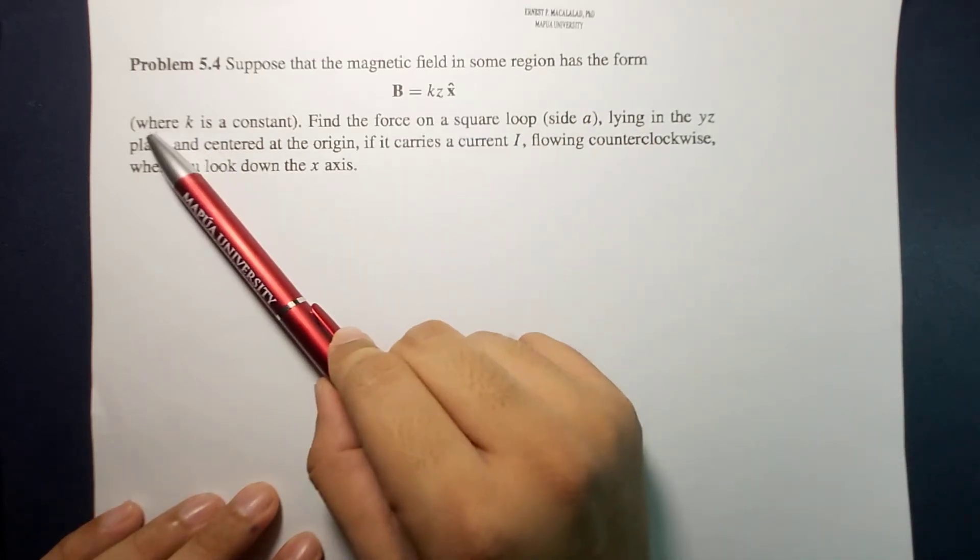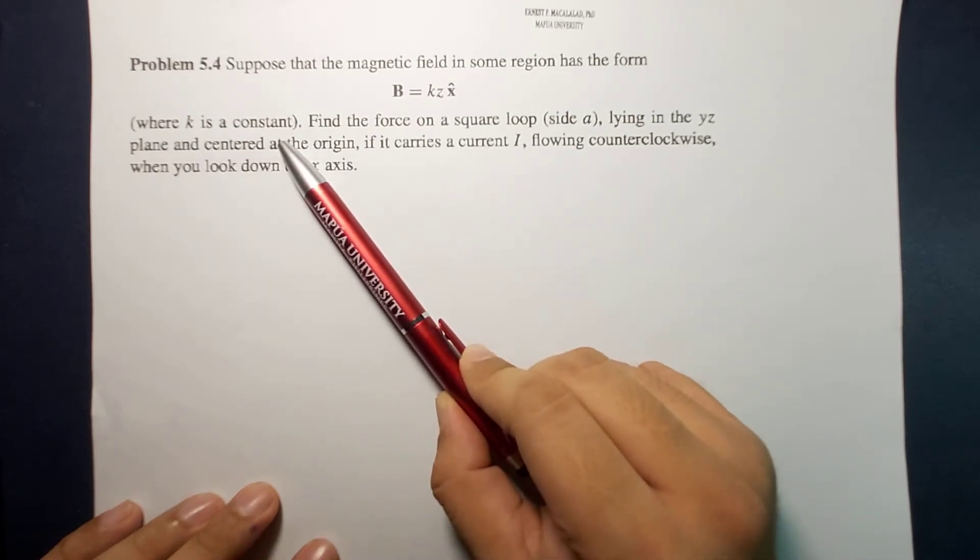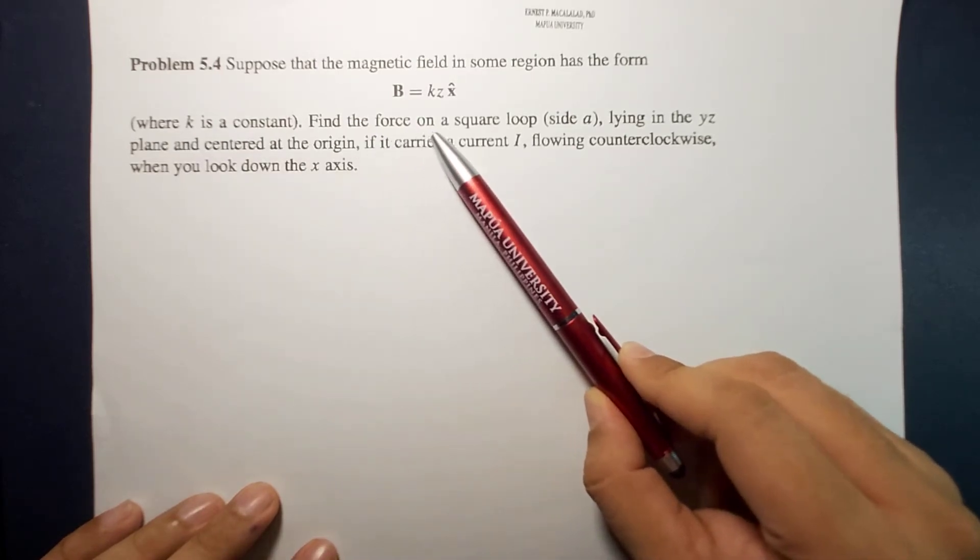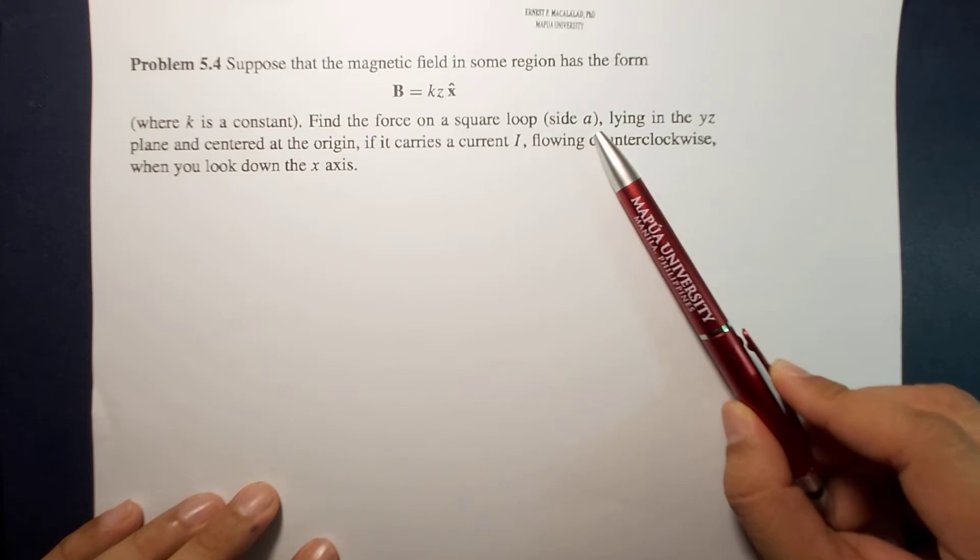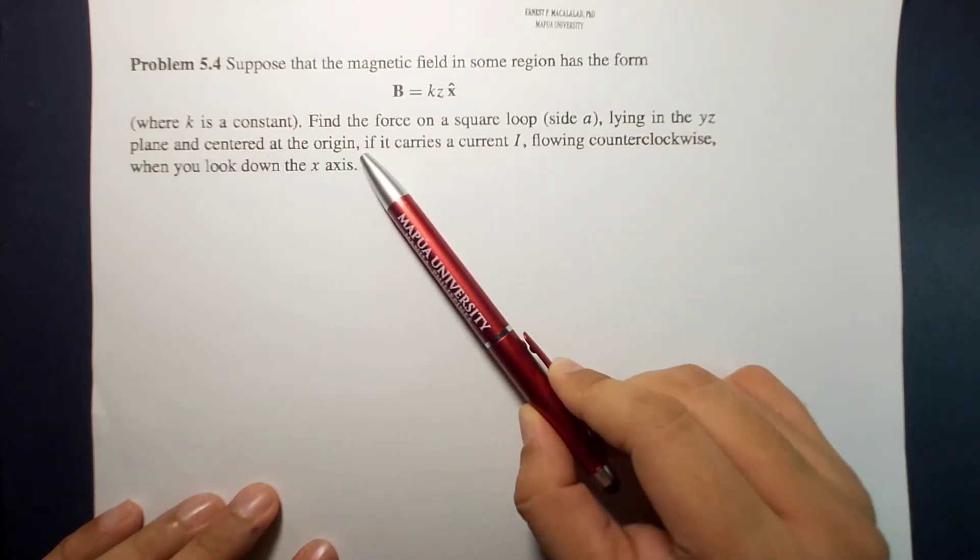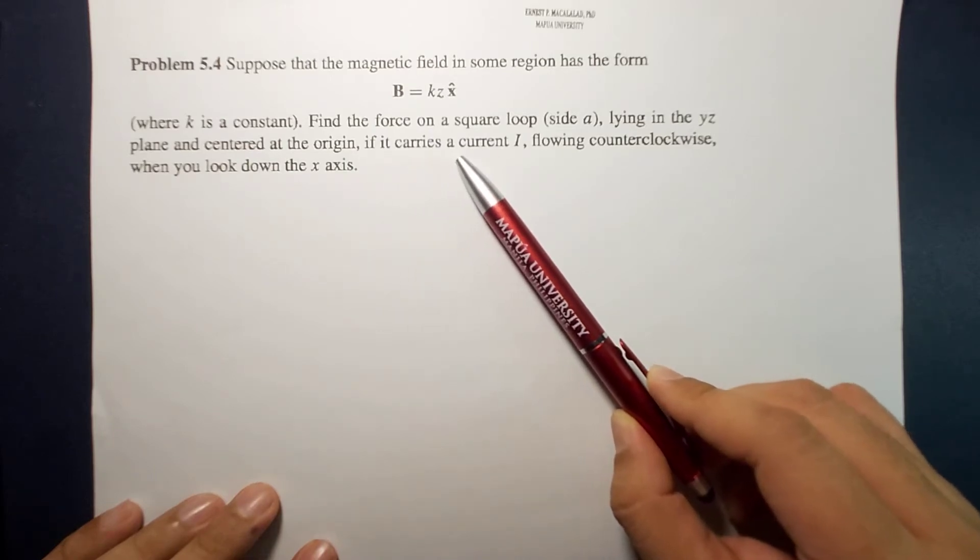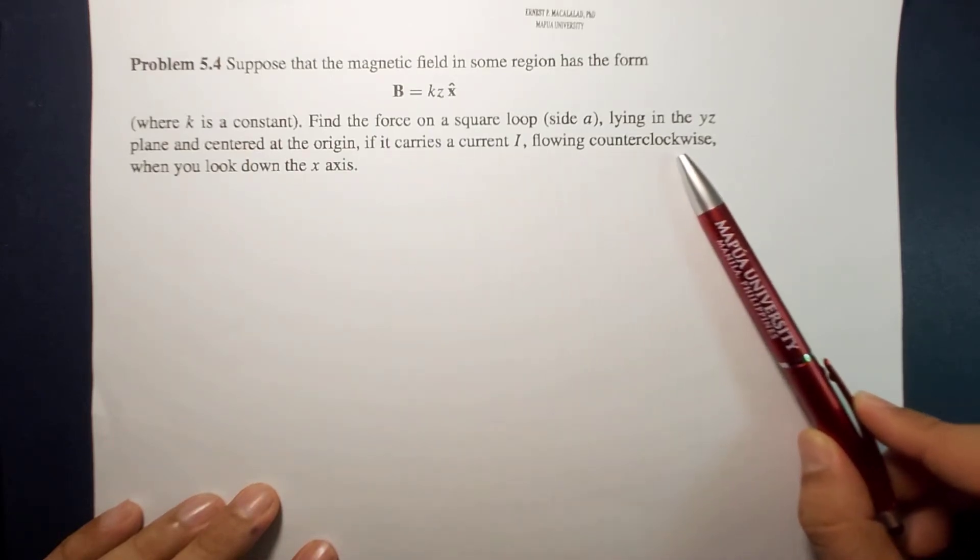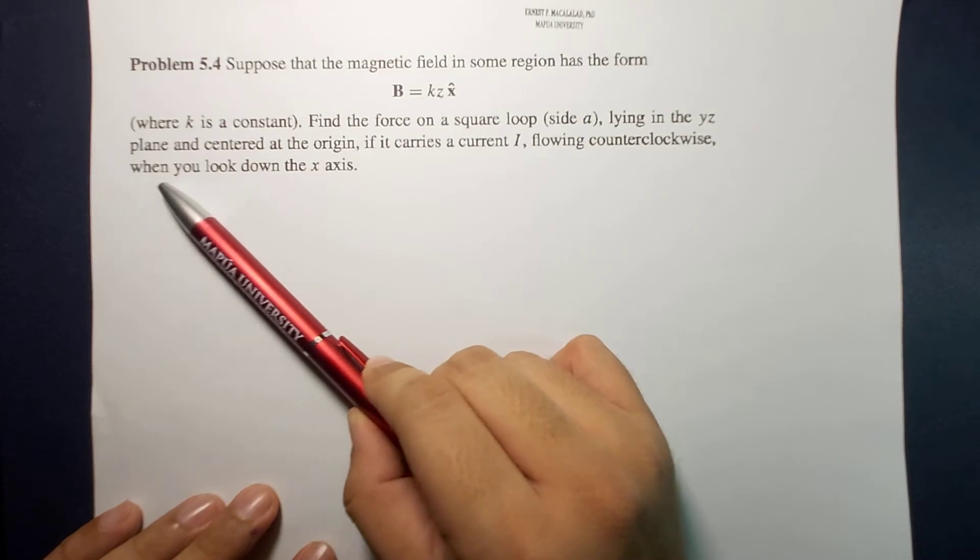The problem reads: suppose that the magnetic field in some region has the form B equals kz x-hat. In this case k is a constant. Find the force on a square loop of side a lying in the yz plane and centered at the origin.